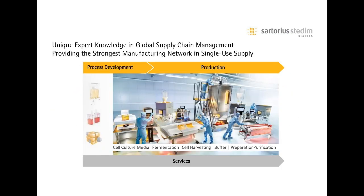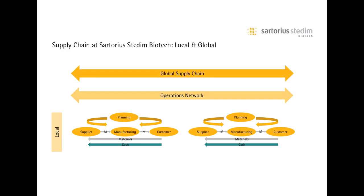Sartorius is the leader in providing to its customers a full range of products and systems for the entire upstream and downstream processes. That includes cell culture media, fermentation, cell harvesting and downstream processes, up to final filling. During this webinar, we will focus on the global supply chain for the fluid management technology operation unit. In Sartorius Stedim, the supply chain is organized with two entities.